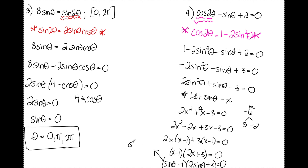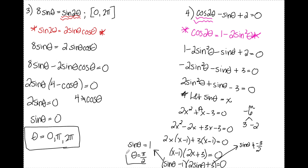Substituting sine theta back in for x, I have (sine theta minus 1)(2 sine theta plus 3) equals 0. On the left side, sine theta equals 1, which means theta equals π/2. On the right side, sine theta equals negative 3/2, which is less than negative 1, so that's no solution. My only solution is theta equals π/2.